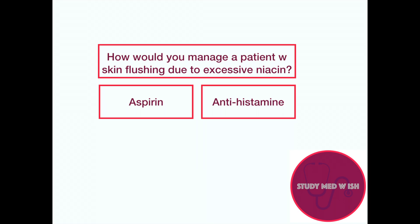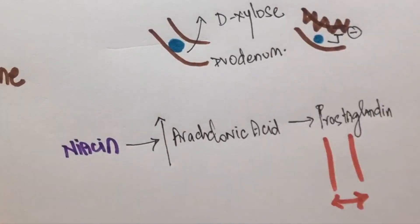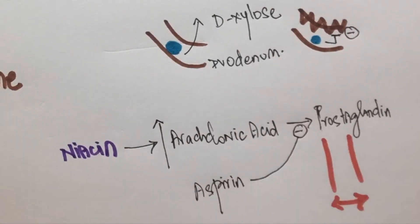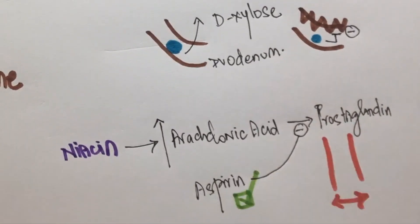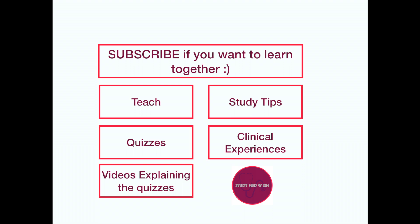I mentioned that the 10th concept is going to be a surprise. So if you've made it this far, this is the 10th concept for you. How do we manage a patient who presents with facial flushing due to Niacin? Niacin stimulates the breakdown of arachidonic acid and increases prostaglandins, which cause vasodilation. Since aspirin blocks COX, it prevents the formation of prostaglandins. Hence, we should use aspirin and not antihistamines for Niacin-induced facial flushing.